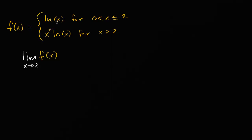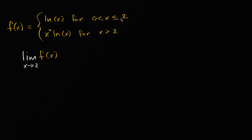We've got this function f of x that is piecewise continuous, defined over several intervals. For zero less than x less than or equal to two, f of x is natural log of x. For any x greater than two, f of x is going to be x squared times the natural log of x.